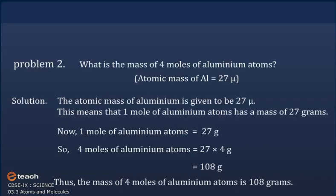Problem 2: What is the mass of 4 moles of aluminum atoms? Atomic mass of Al = 27u. Solution: the atomic mass of aluminum is 27u, which means 1 mole of aluminum atoms = 27 grams. So 4 moles of aluminum atoms = 27×4 = 108 grams. Thus, the mass of 4 moles of aluminum atoms is 108 grams.